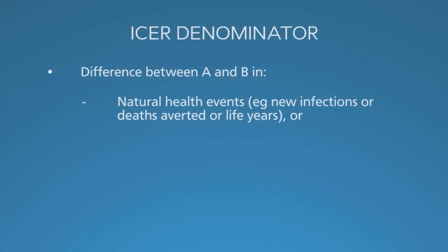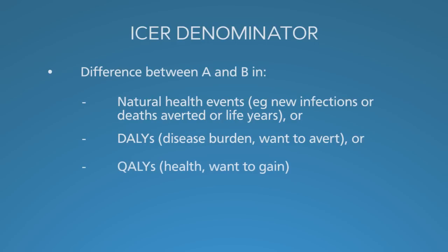However, there are limits to what kind of comparisons we can make when we use natural health events. It's hard to compare a measles episode prevented to an added life year. This is why we use metrics like DALYs and QALYs. DALYs, or disability-adjusted life years, are a measure of disease burden — by definition, they are undesirable; we want to avert DALYs. QALYs are a measure of health status, and therefore they are desirable; we want to gain them. We go to the extra trouble of DALYs and QALYs because we want to capture all of the effects of disease. If we look just at life years, we capture only the reduced mortality benefits of intervening. If we talk about quality of life, we might capture the effects of reducing morbidity. If we want to put it all together and compare across different diseases, that's when DALYs and QALYs become helpful.